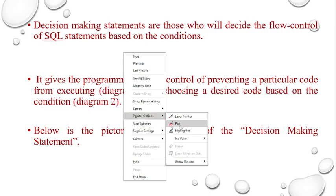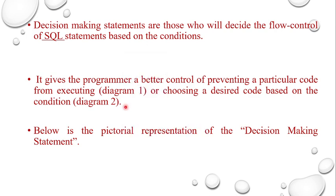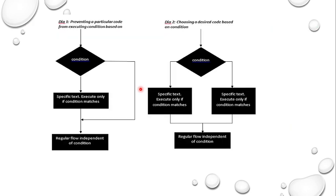Let's see a pictorial diagram of this decision-making statement. The condition — if true — executes specific code only if the condition matches, then continues to the regular flow independent of condition. Another way: condition matches, execute specific code, then move to regular flow — or another option executes specific code only if condition matches.